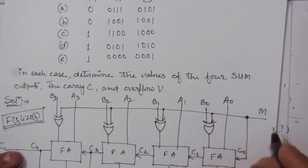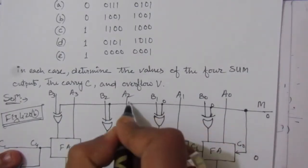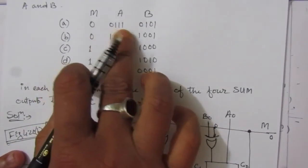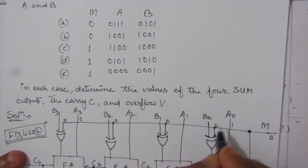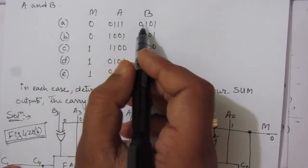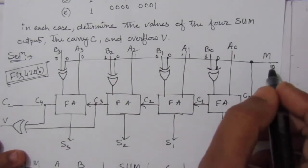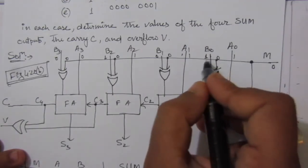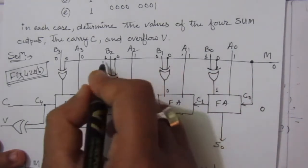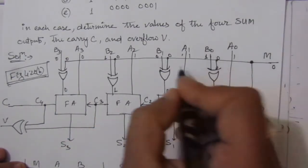In the first case, M is equal to 0, so 0 will be applied to all XOR gates. The A value is 0111 and we apply the XOR operations: 0 XOR 1 is 1, 0 XOR 0 is 0, 0 XOR 1 is 1, and 0 XOR 0 is 0. So these outputs are now at the inputs of the full adders.